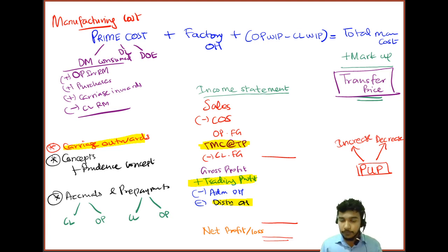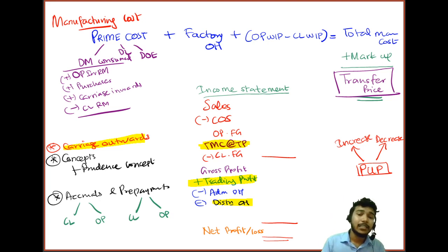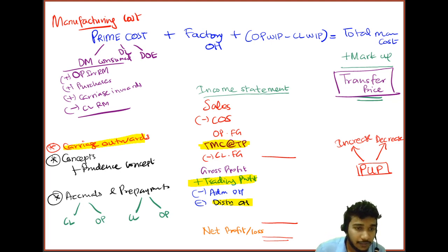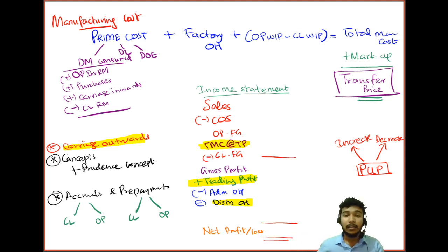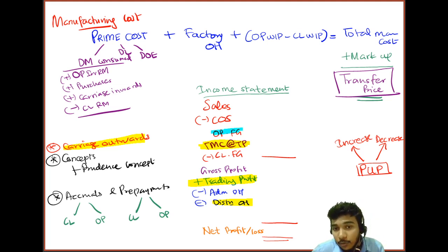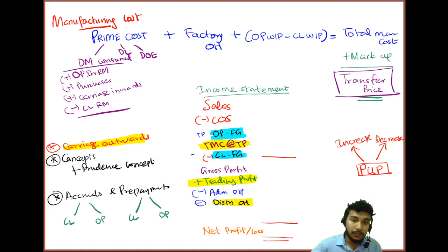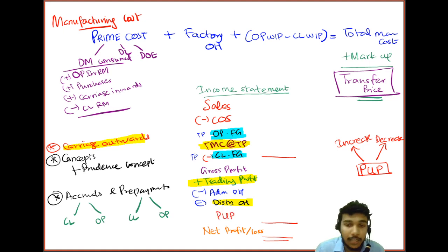After adding trading profit back, we deduct all non-production overheads — any overhead not incurred in the factory or during the production process is treated as a non-production overhead. The total manufacturing cost is valued at the transfer price, which is incorrect when preparing the income statement for the entire company, because this was a transaction within the organization, not between the organization and a third party. There is another problem: opening and closing finished goods are both valued at the transfer price.